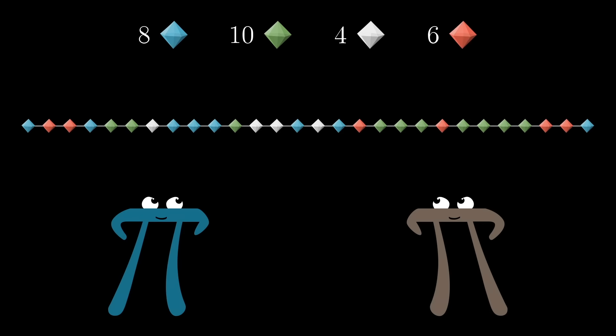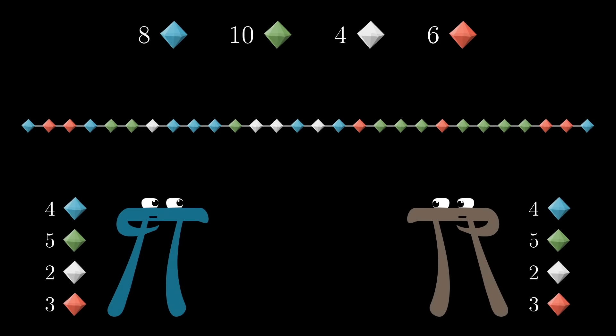You and your friend want to split up the booty evenly, with each of you getting half of each jewel type. That is four sapphires, five emeralds, two diamonds, and three rubies each.